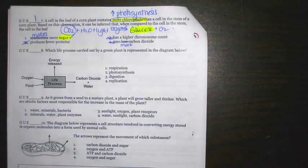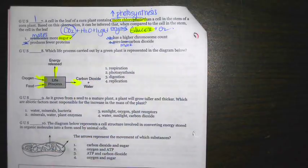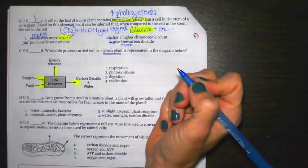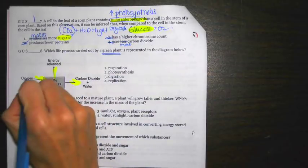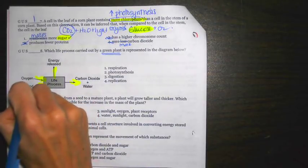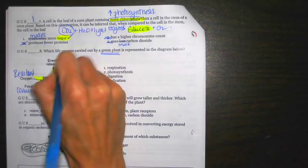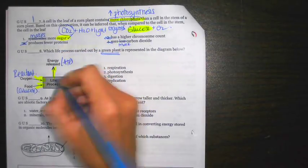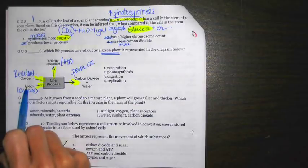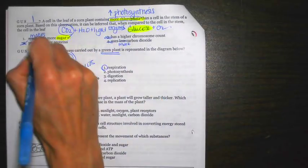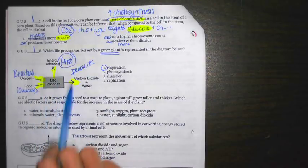Which life process carried out by a green plant is represented in the diagram? Once again, follow the arrows. And in this one, they actually are trying to fool you. It says green plant. Everyone wants to think photosynthesis when they see green plant. But again, follow the arrowheads. Here we have oxygen in food. Food, something like glucose. Anything going in is going to be a reactant. Energy released is my ATP. The arrowhead, those are all going to be my product. If I have oxygen in food going in and ATP being produced, that's going to be an example of respiration. So don't just see green plant and automatically think photosynthesis. You have to actually analyze the diagram.